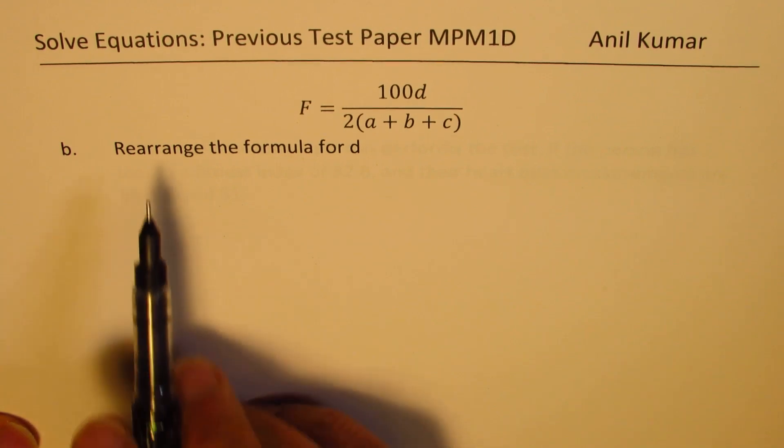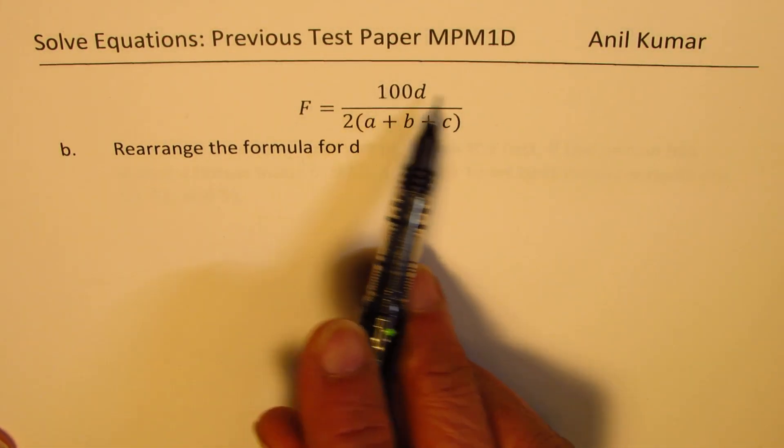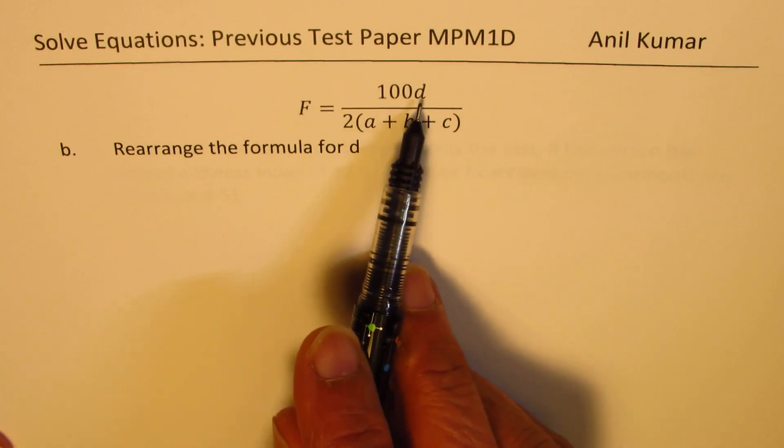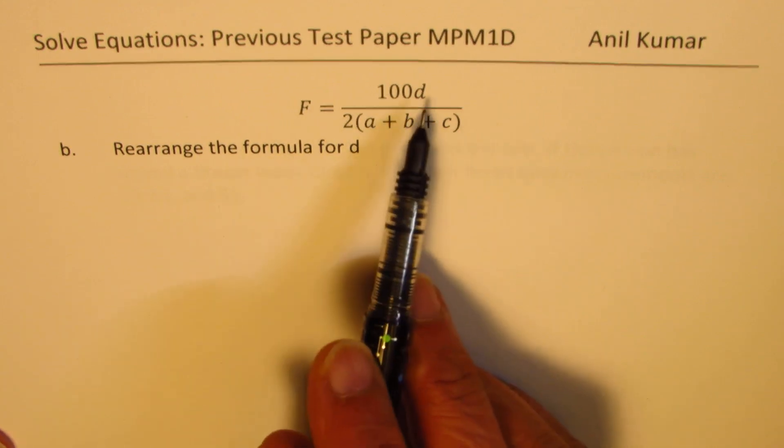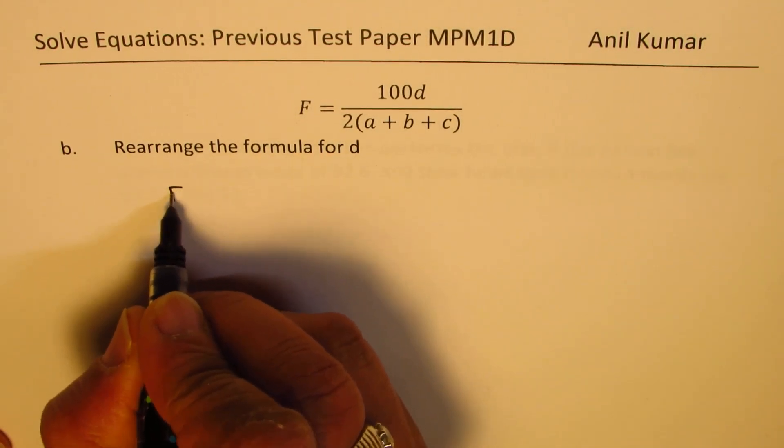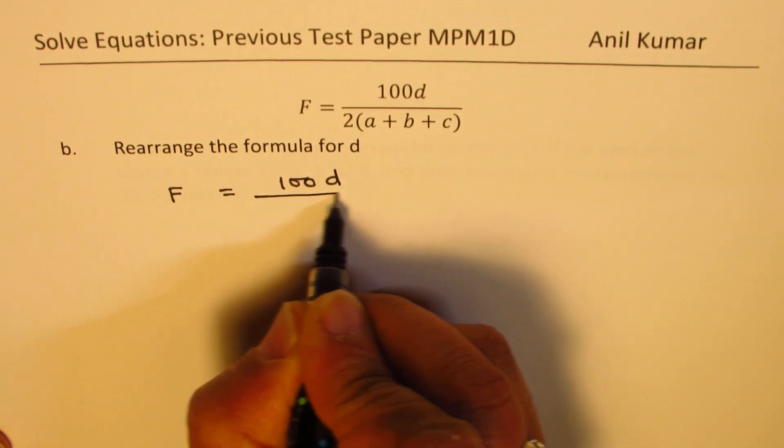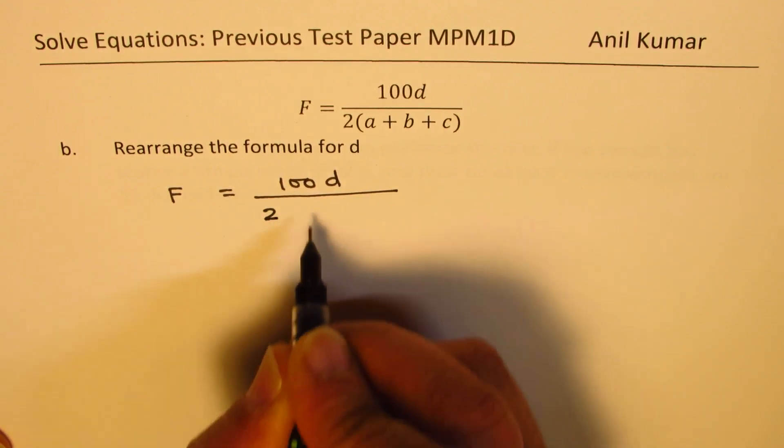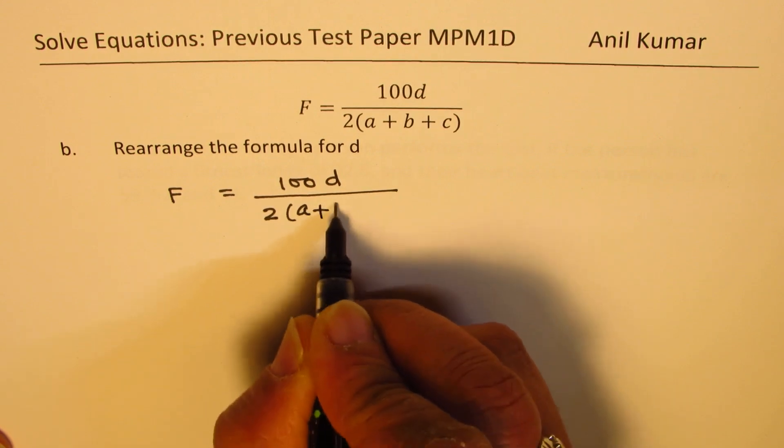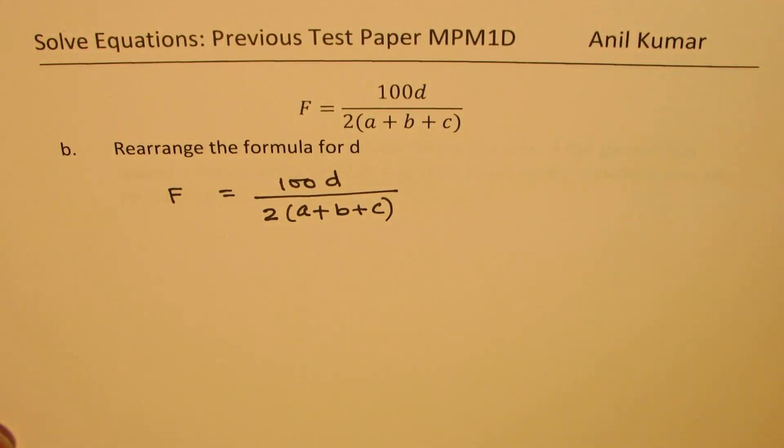In part B, the question is to rearrange the formula for D. So we need to rearrange the formula for D and then in C, we'll calculate D. So to rearrange, we'll actually cross multiply. We are given F equals 100D divided by 2 times (A plus B plus C).